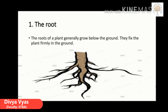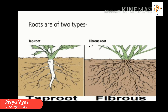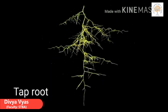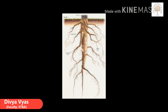Let's discuss about the root. The roots of a plant generally grow below the ground. They fix the plant firmly in the ground and keep it upright. They take water and food from the soil. The roots are of two types: first, tap root; second, fibrous root. When there is a long main root at the end of the stem and many small roots growing from the main root, it is called a tap root.